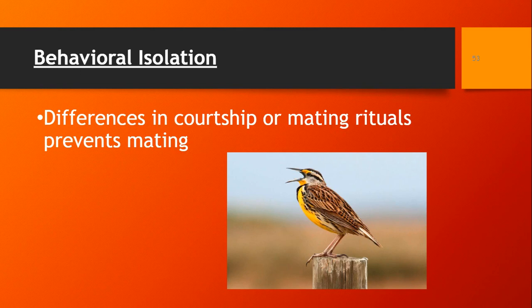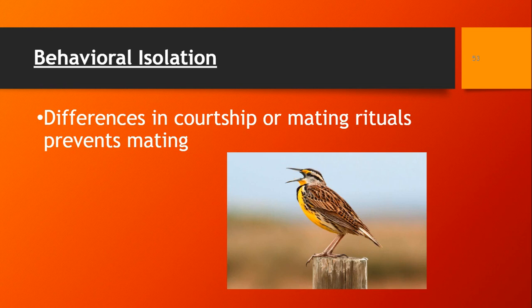Behavioral isolation is based on the behavior of the organism — maybe courtship or mating rituals prevent mating. A common example is birds and their songs. Male birds sing or do displays, like a peacock with big tail feathers, to attract mates. If a cardinal sang to a peacock, the peacock wouldn't respond. And if a male peacock displayed his feathers to a female cardinal, she wouldn't be attracted and they wouldn't mate. So behaviors can differ as well.